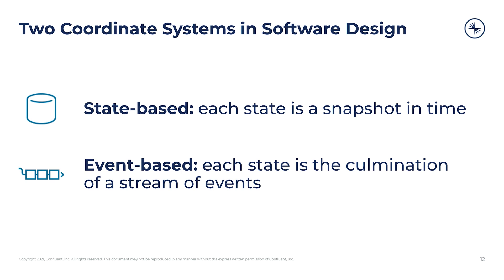So in summary, we have two coordinate systems for modeling real-world problems in software. One uses state and is coordinate-based. The other uses events and is transition-based. You are likely very familiar with the state-based approach if you're familiar with database development, but the event modeling approach, although less popular, is better suited to many of today's problems, particularly as systems get larger and incorporate a greater number of separate parts.